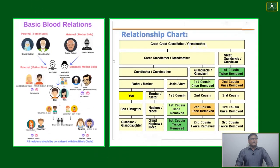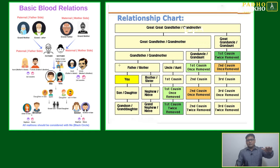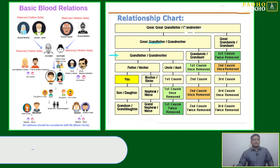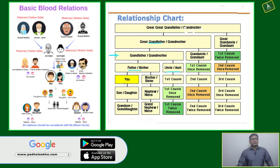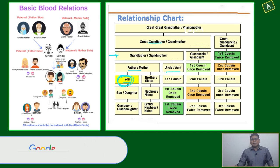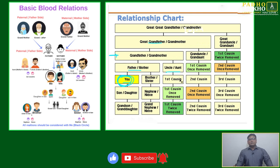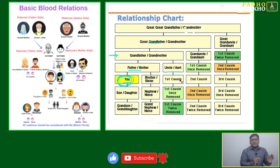Think of this as a six-story building. At the top is your great-grandfather. Generally, we start from your grandfather level — grandfather, grand uncle — and you are at the reference point in the middle. All relationship names are calculated based on this reference point.